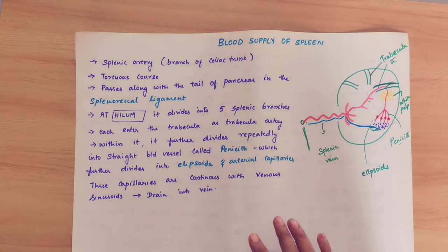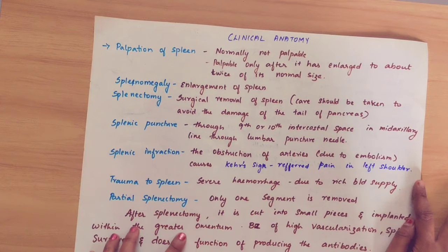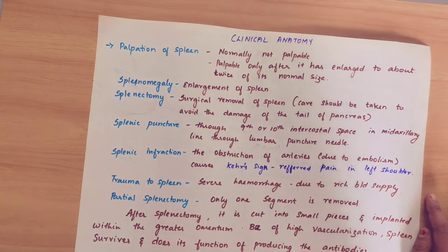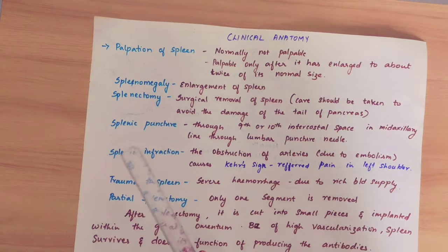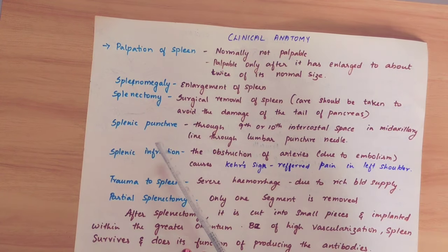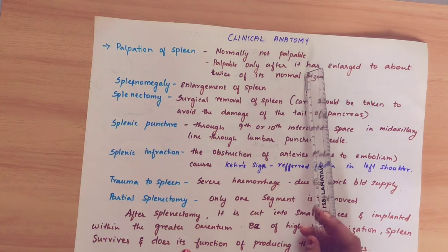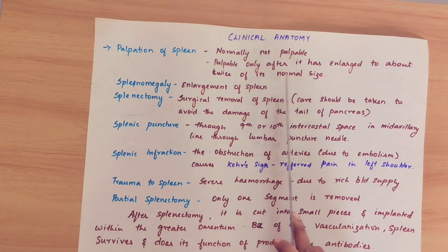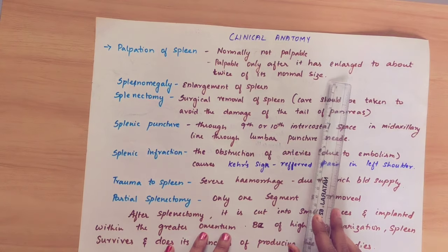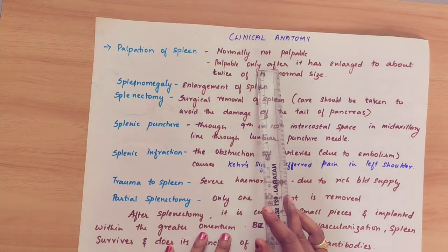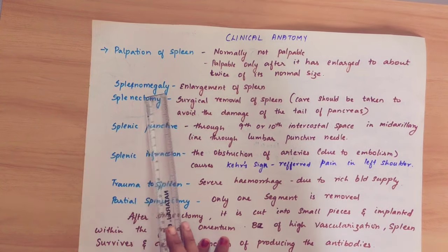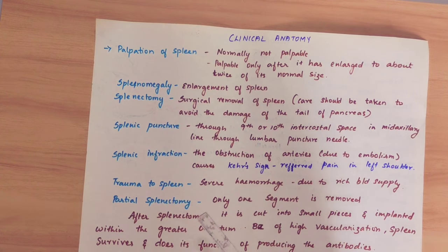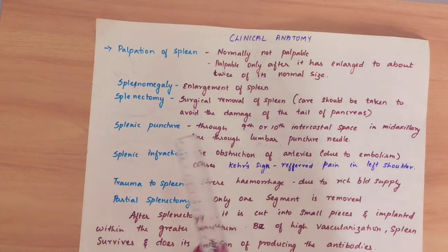This is all about the blood supply of the spleen. Now coming to the clinical anatomy of the spleen. The first point is palpation of the spleen. We usually palpate the spleen only when it is enlarged — that is, in a splenomegaly condition.